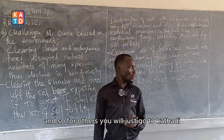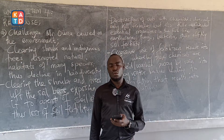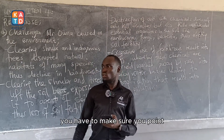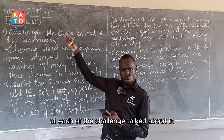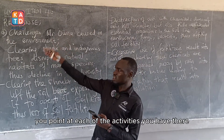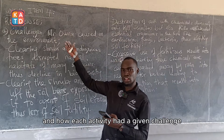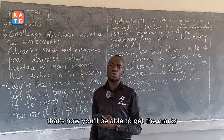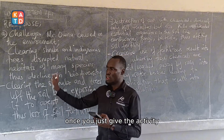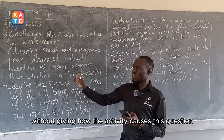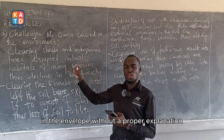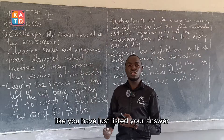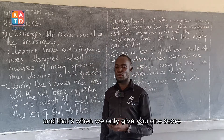Those are the main challenges you can discuss. For this curriculum, you must make sure you point at each of the activities and explain how each activity had a given challenge on the environment — well explained. If you just give the activities without explaining how they cause disruption to the environment, without a proper explanation, you will only get one mark. You need to explain each point fully to get maximum scores.